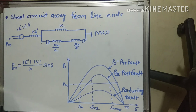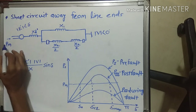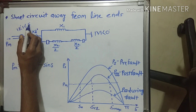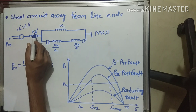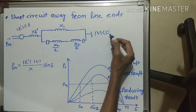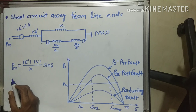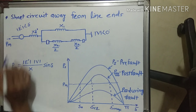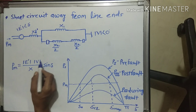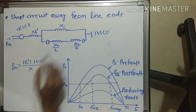To understand critical clearing angle and how to find it, I take one condition here. The condition is short circuit away from line ends — this is end 1 and this is end 2. PM is the mechanical input for generator, E dash at an angle del is the electrical input, X3 dash is the transient reactance, X1 is the reactance of line 1, X2 is the reactance of line 2. V at an angle 0 is the electrical output. We assume the angle of output power is the reference angle, so this angle is 0 and this angle is del. The formula for mechanical power is E dash V divided by X into sine del, where del is the displacement angle of the rotor of the generator, and X is the reactance of the whole system.